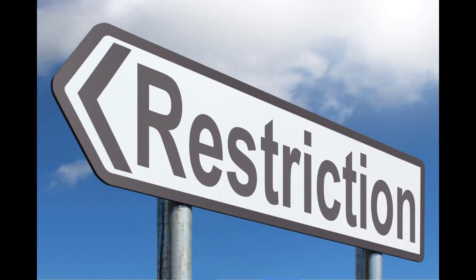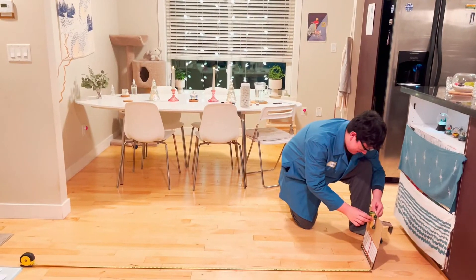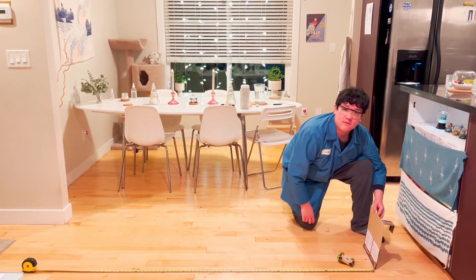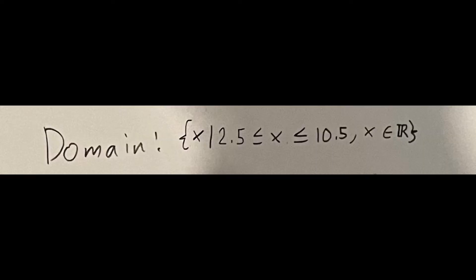Before we go into step three, we have to go over a couple restrictions. The first one is a domain. Because the height of the ramp can increase forever, I chose a domain of the first height I recorded and the last height I recorded. And if there's a domain, that also means there's a range. As you can see, this is the range I chose for the equation.